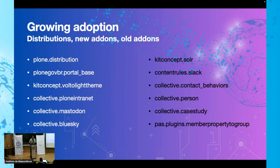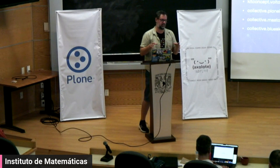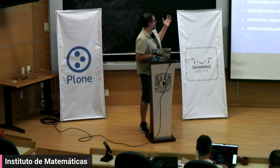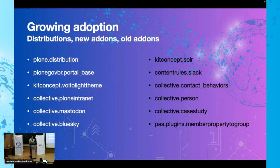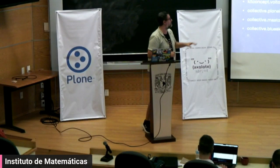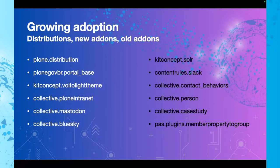This slide with two colors is just to make sure everyone is happy. But we have lots of things already tested with PyTest: Plone distribution — which we'll have some talks about during this World Plone Day — and we are here in Mexico during the Arolote sprint working on that. Also: kitconcept.voltolighttheme, collective.ploneinternet, collective.mastodon, and collective.bluesky. Because you have your own Plone website and every time you post a new blog post or news item, you want to push to Bluesky and Mastodon to avoid doing that manually. Also: kitconcept.solar, contentmissing.contentrulesslack, collective.person, collective.casestudy, pas.plugins, memberpropertiestogroup, and so on.